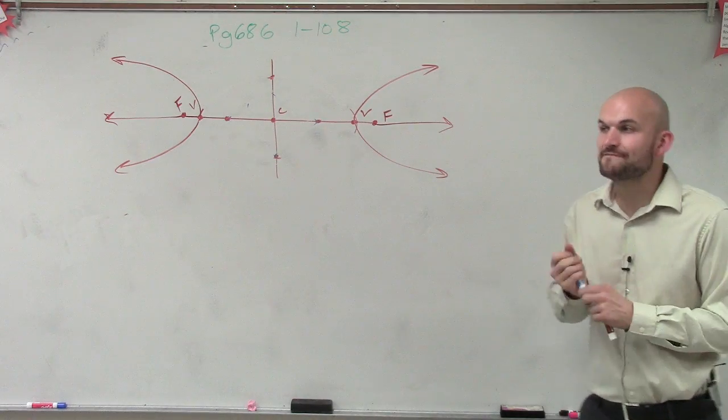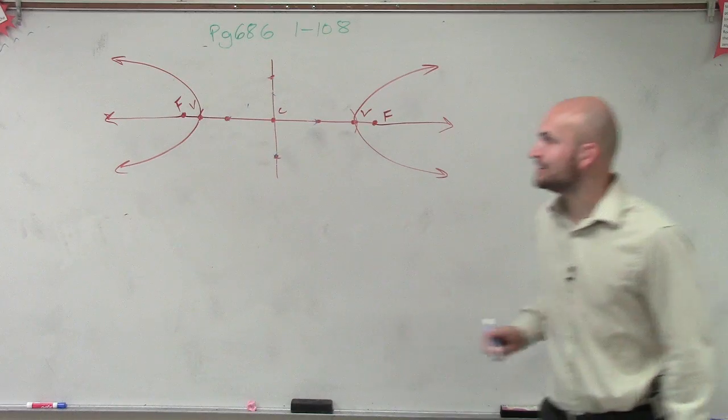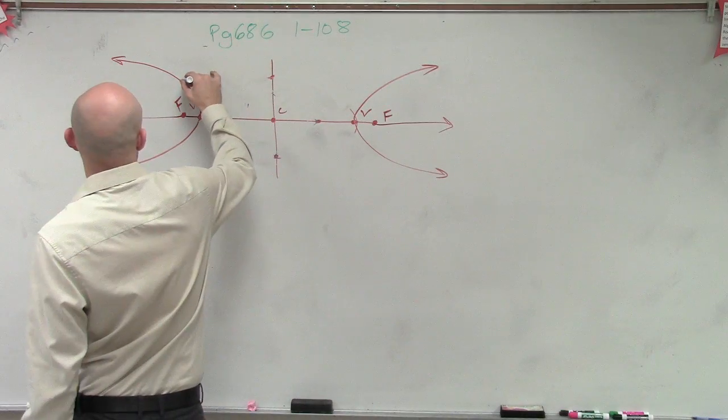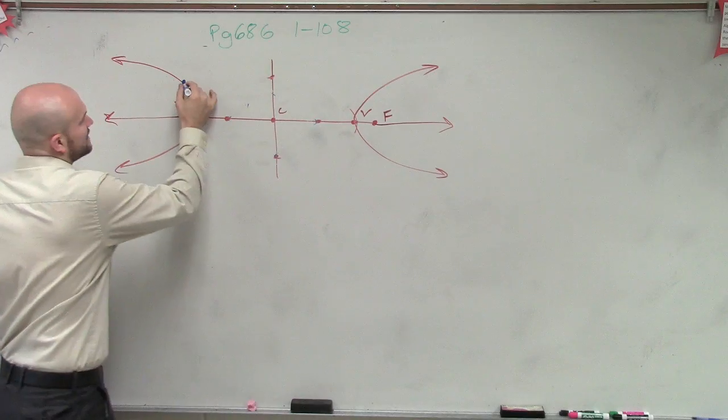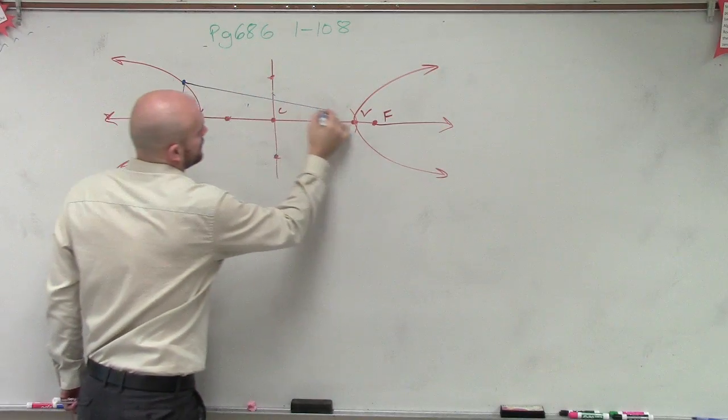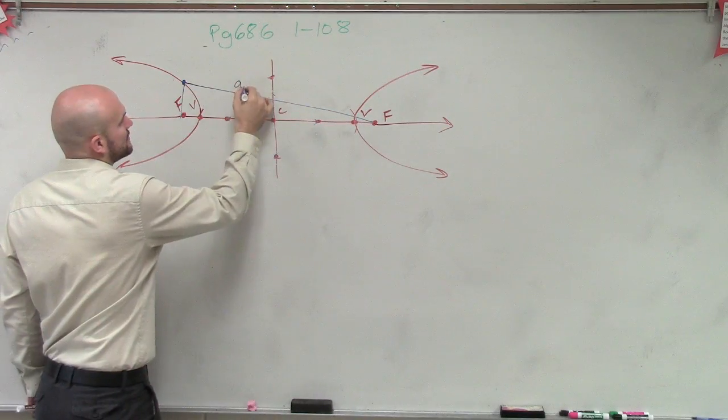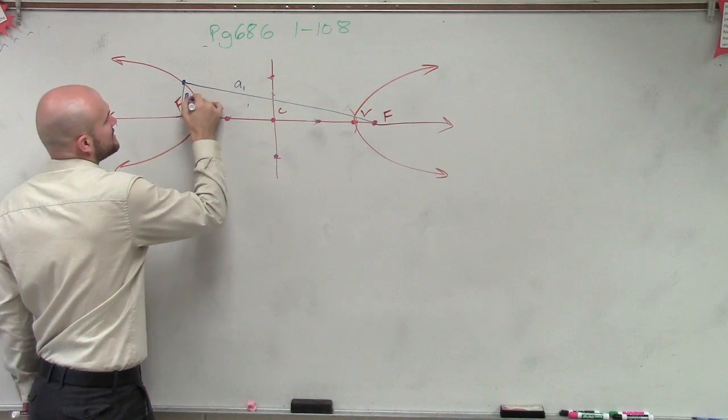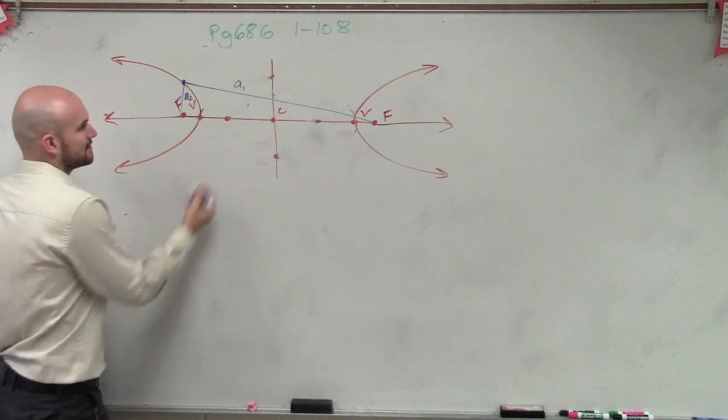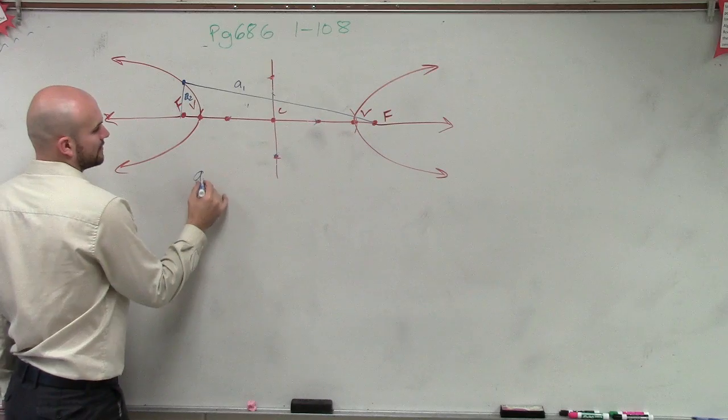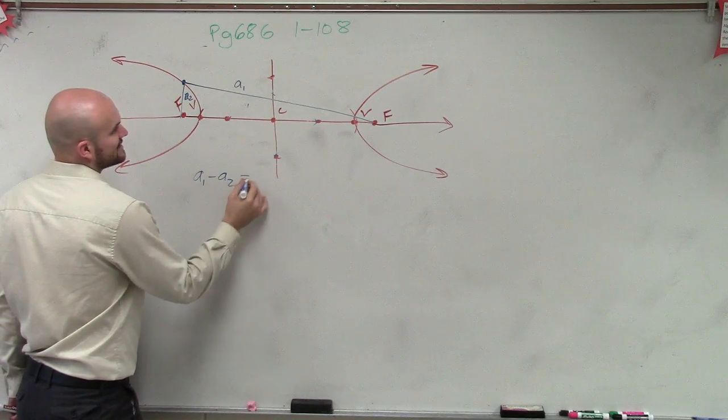And just to kind of go through it, the definition of hyperbola is going to be for any point on my hyperbola, the difference of the distance between the two points is constant. So a1 minus a2 is equal to...